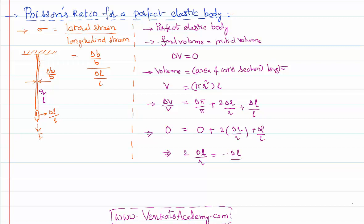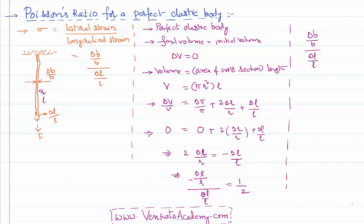This implies 2 times delta r by r equals minus delta l by l, so delta r by r divided by delta l by l equals one-half. We keep a negative sign with delta r by r because the length increases in extension whereas the breadth decreases. Therefore, the ratio of delta r by r to delta l by l — which is the same as delta b by b to delta l by l — is the definition of Poisson's ratio, and it equals 0.5.